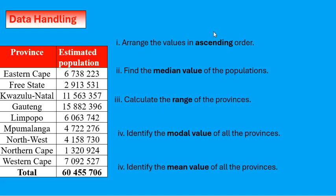Welcome to data handling. The population sizes for each province are given on the left-hand side in the table. If we look at the first question: arrange the values in ascending order.